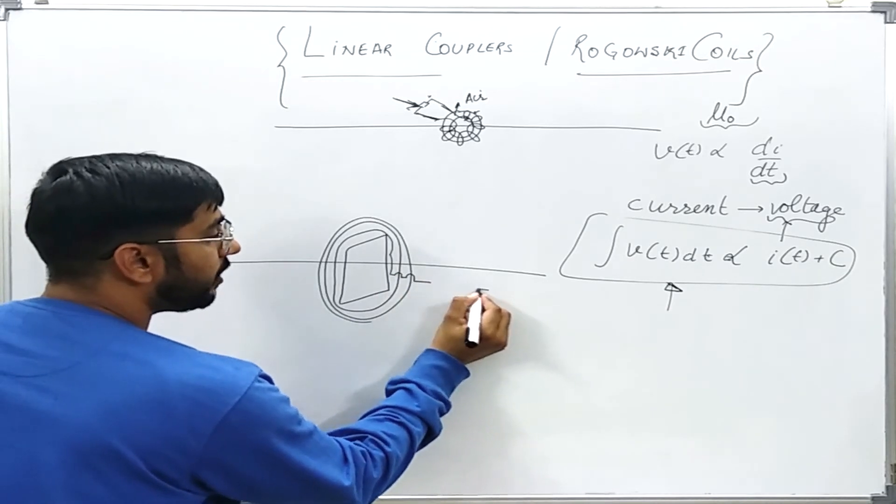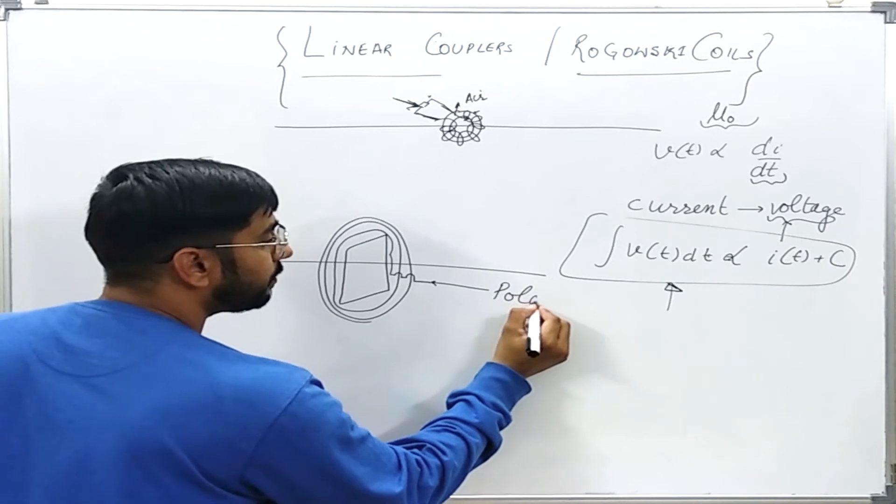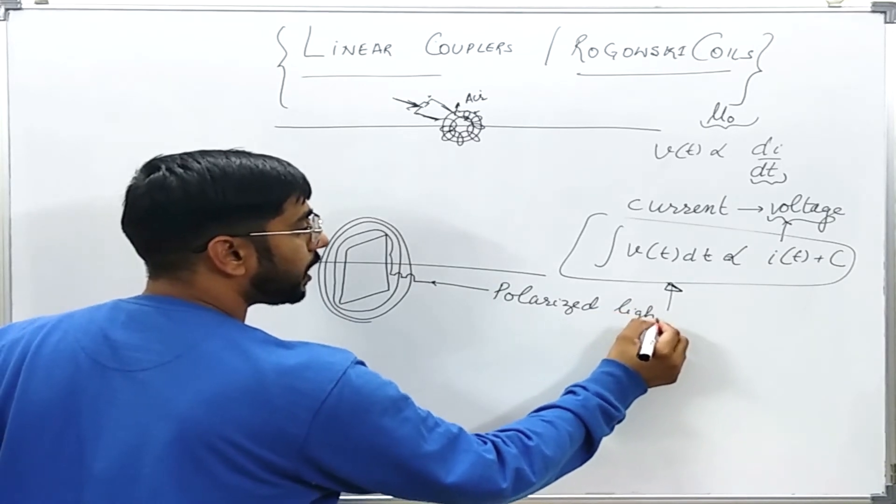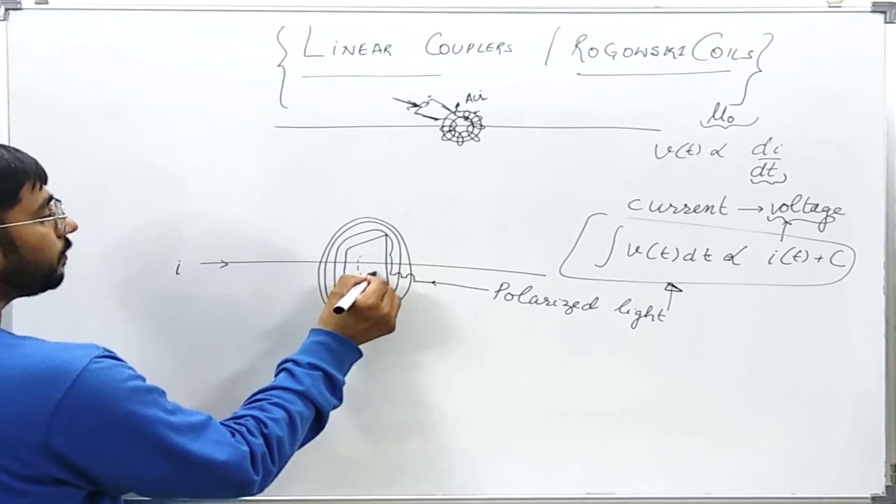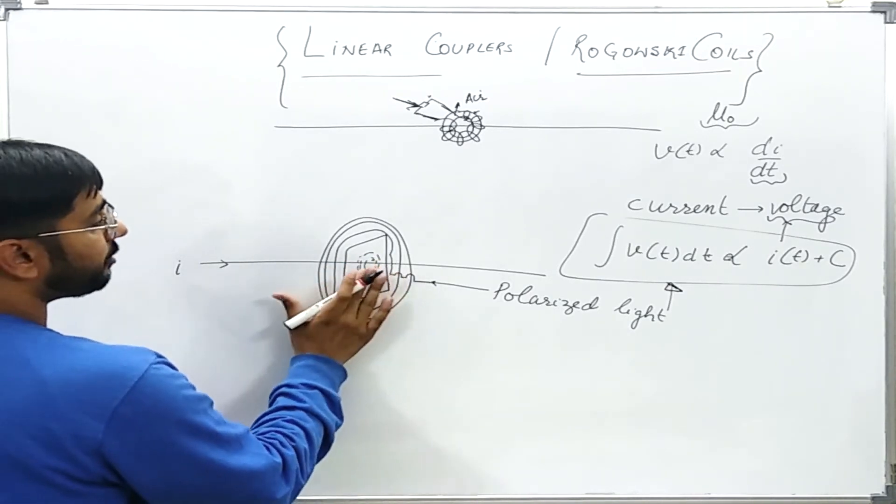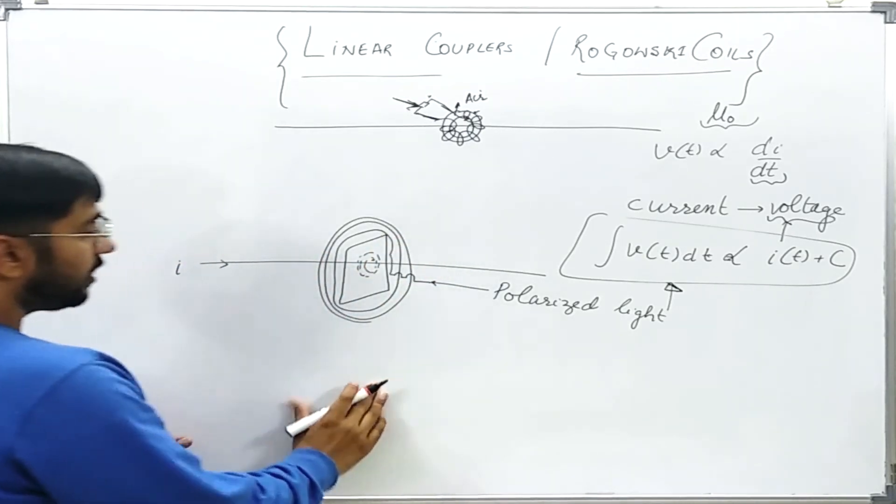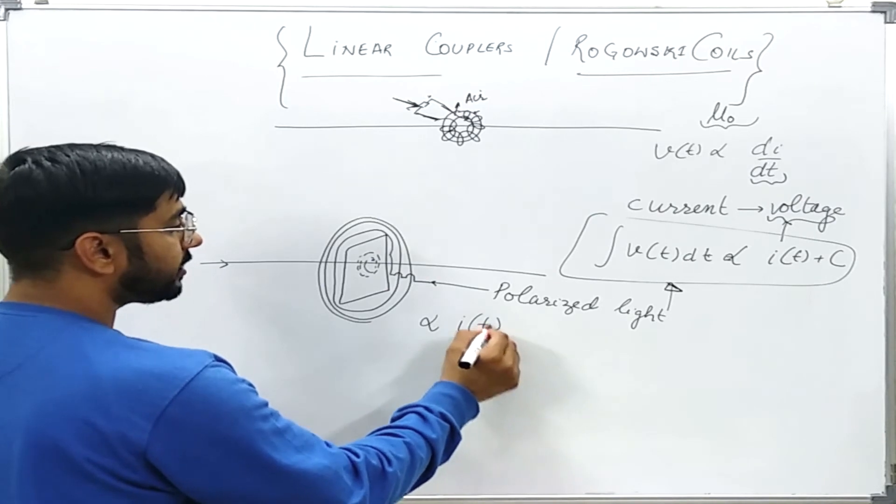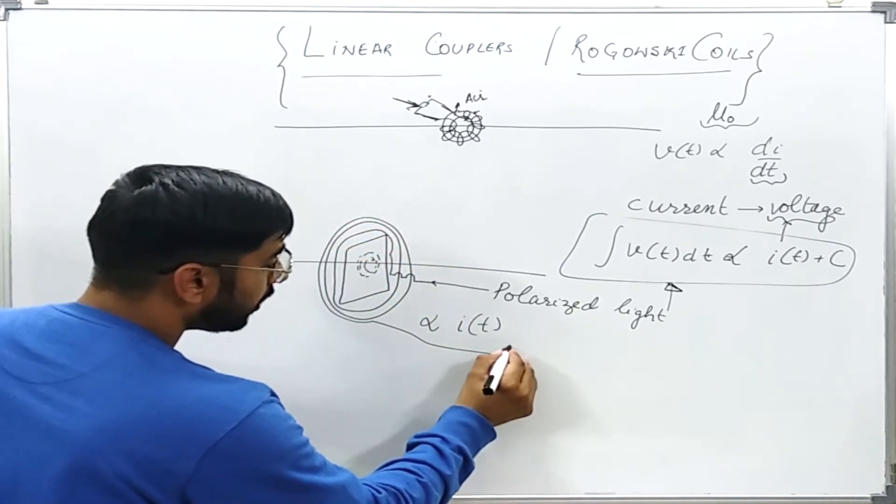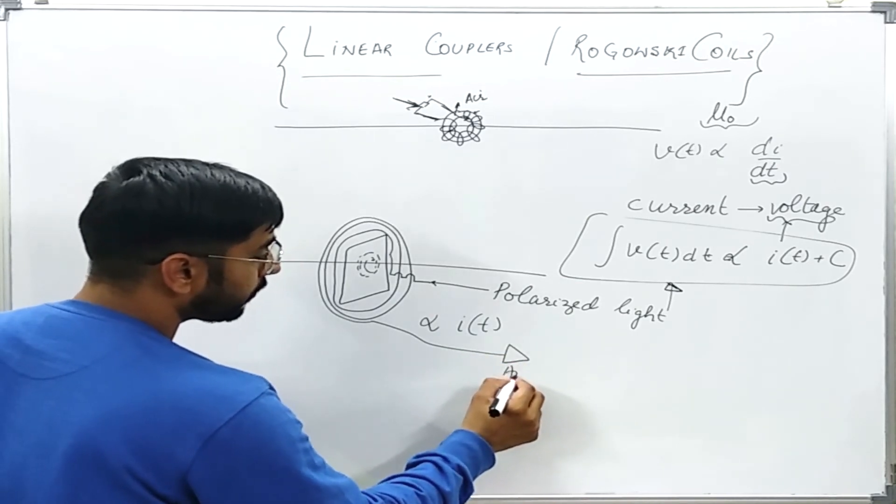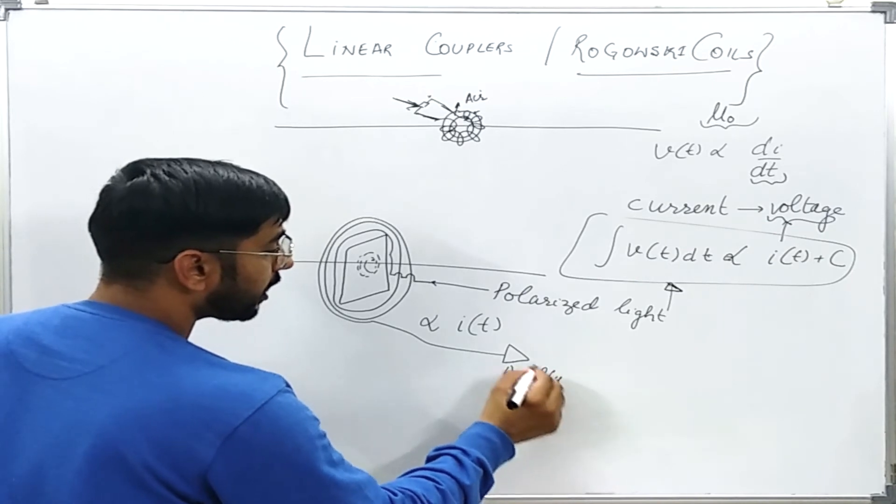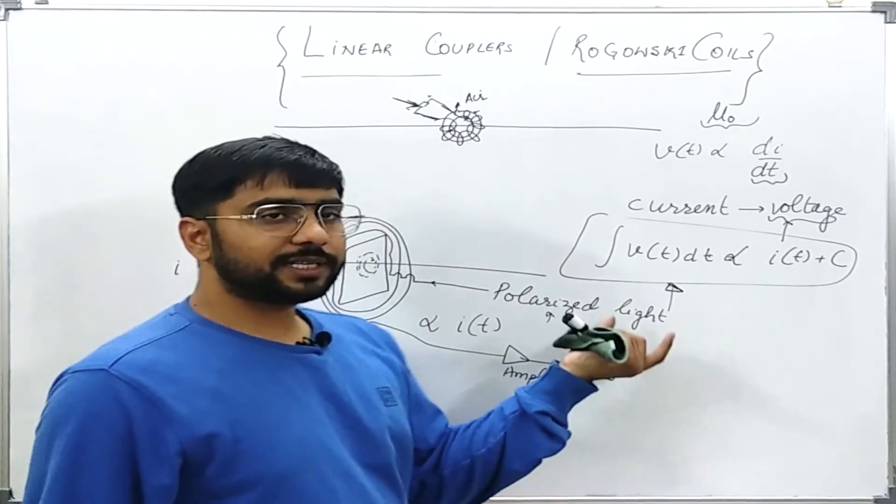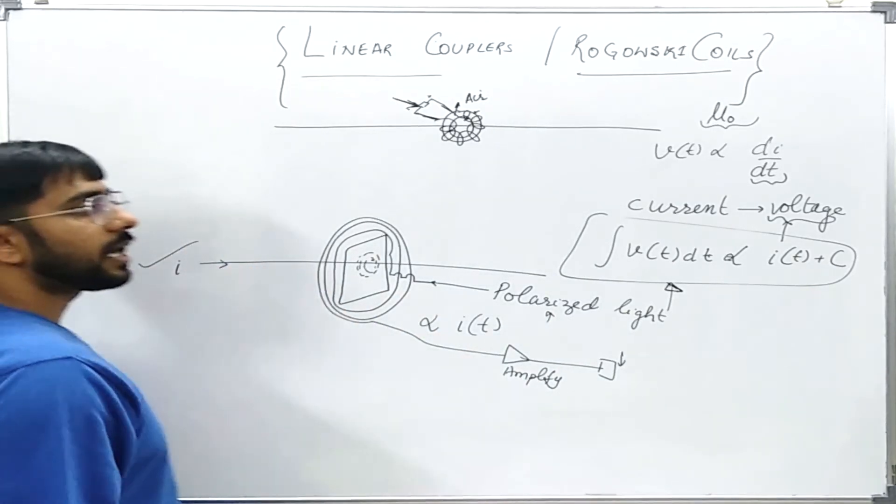From here I will input a light signal which is already polarized to some given angle - polarized light I will input. This current is going to create magnetic field. This magnetic field is going to shift the polarization angle or the plane of the polarization. This shifting will be proportional to the instantaneous value of the current in this conductor. What I will do? I will take this signal, amplify it, and compare the phase angle of the polarization of the input and the output. Based on this difference I can easily find the instantaneous value of the current in the primary.